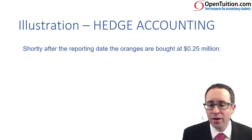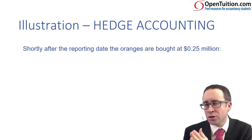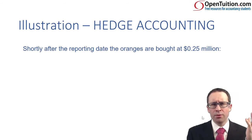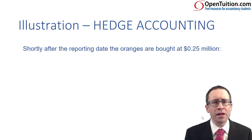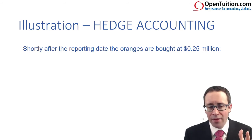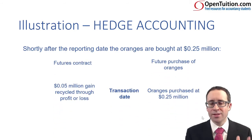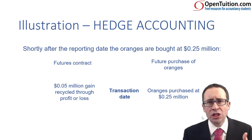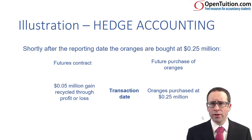Moving on to just after the reporting date — we now buy the oranges. The oranges are still at $0.25 million, so we buy them at $0.25 million. That's the price that we pay. We've actually paid more than what they were originally worth — they were originally worth $0.2 million — so we've essentially made a loss on the purchase of the oranges.